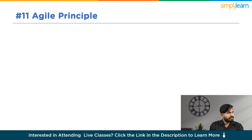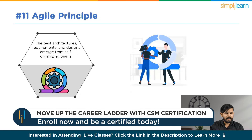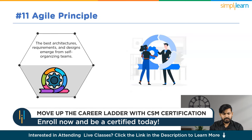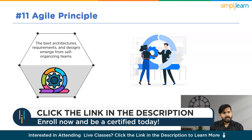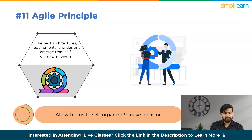Now let us discuss our eleventh Agile Principle. In traditional software development methodologies, team structures can often be hierarchical, resembling a pyramid where management makes key decisions for contributors. Agile principles advocate for self-organizing teams, which adopt a more flat management style. In this approach, decisions are made collaboratively by the team rather than dictated by a singular manager, aligning well with Agile's value of prioritizing teams and interactions over processes and tools.